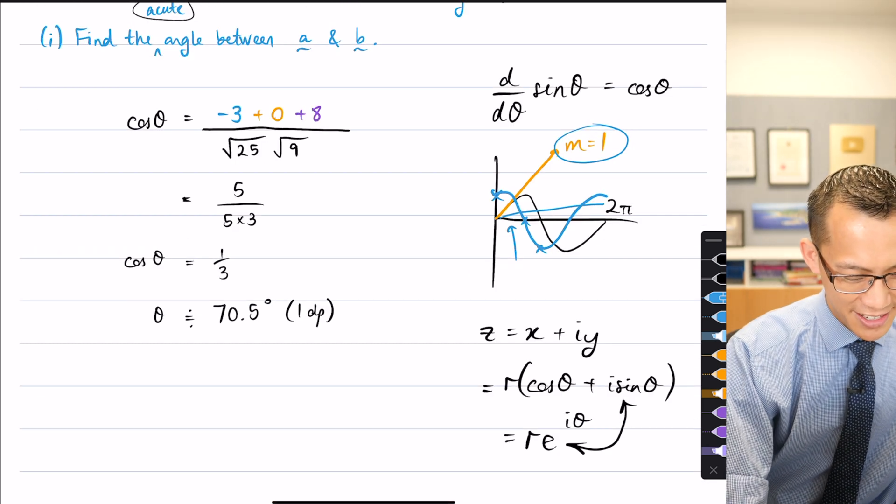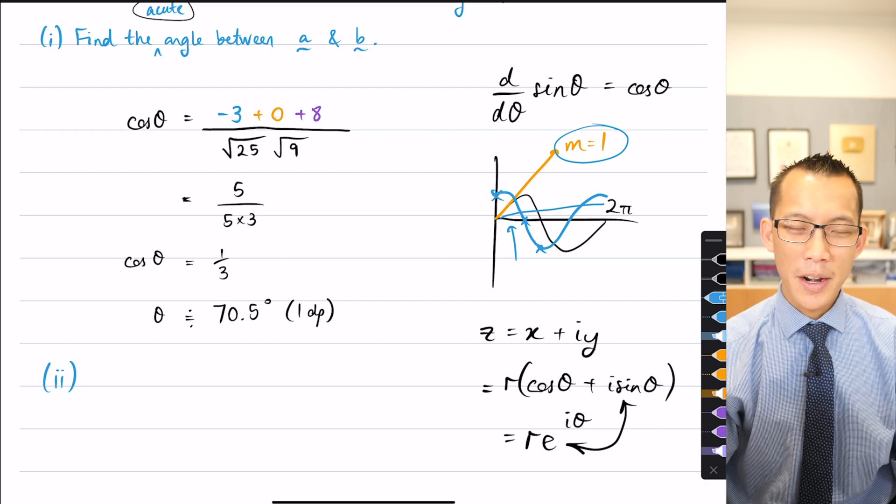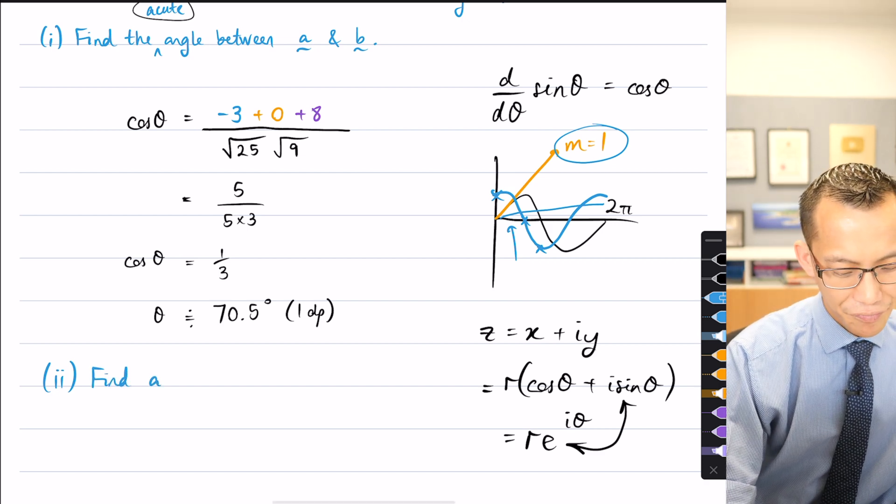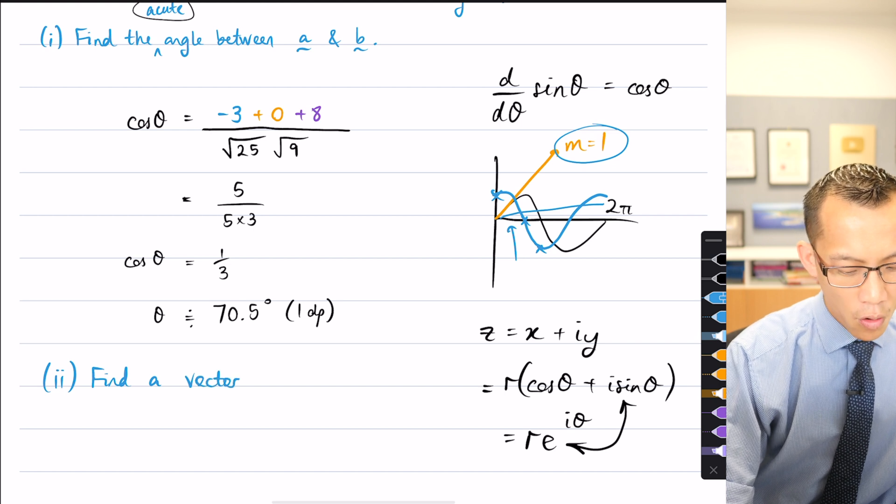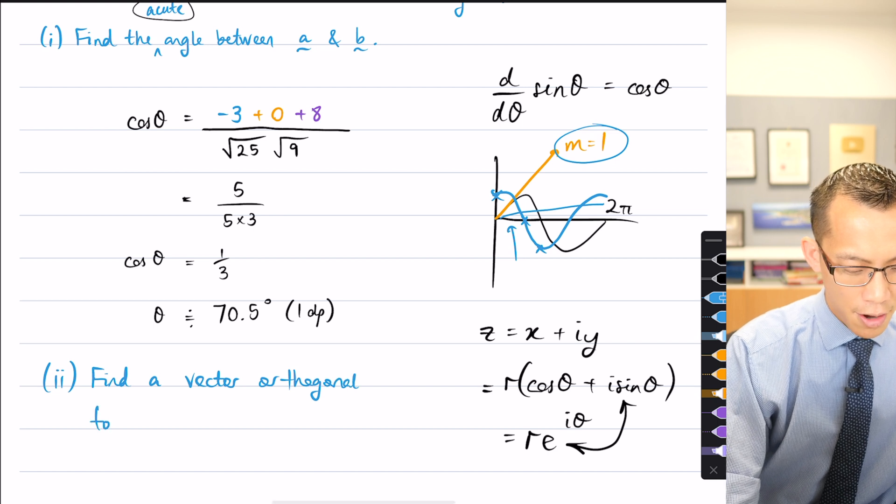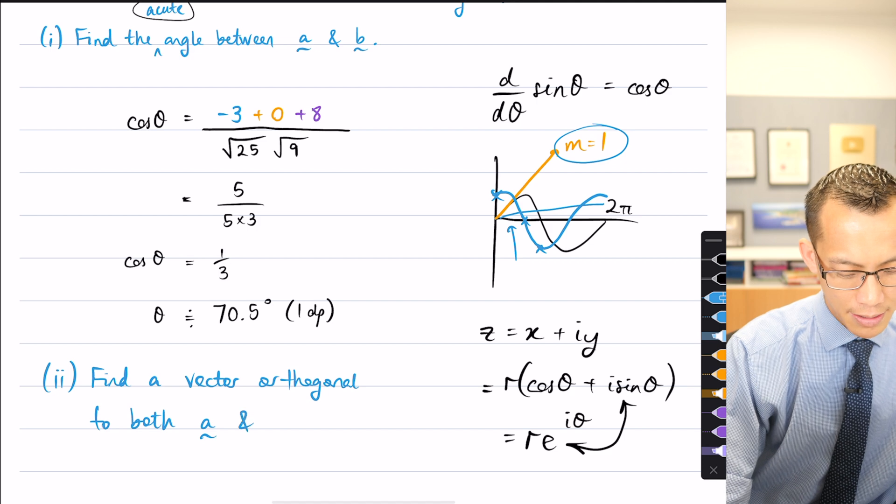Let's do a secondary question to do with this same pair of vectors A and B. So what I'm going to ask this time is, can we find a vector that is orthogonal to both of the vectors that we've been given, to both A and B?